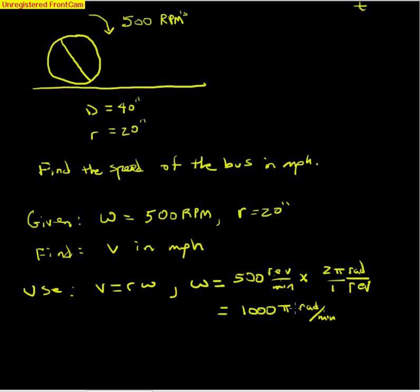If you're starting with RPM, all you have to do is multiply by 2π to convert your omega into radians per minute. Now we're free to use v equals 20 inches, there's our r, times 1000π radians per minute, which is our omega. The result would have units inches per minute.